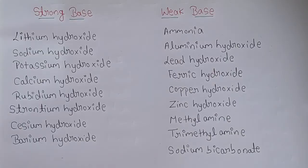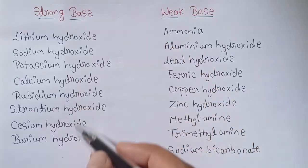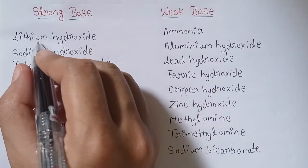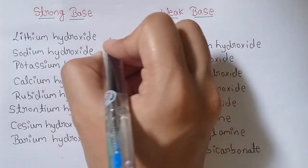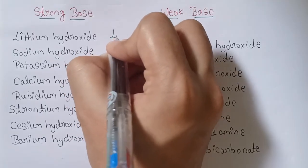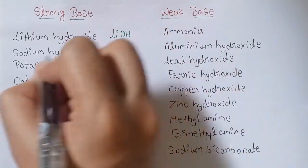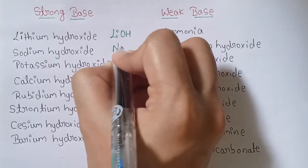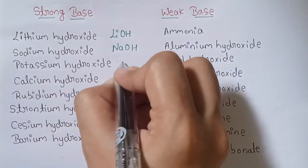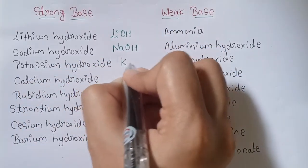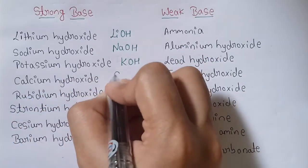Next is the list of strong bases. First is lithium hydroxide (LiOH), sodium hydroxide (NaOH), potassium hydroxide (KOH), and calcium hydroxide (Ca(OH)2).